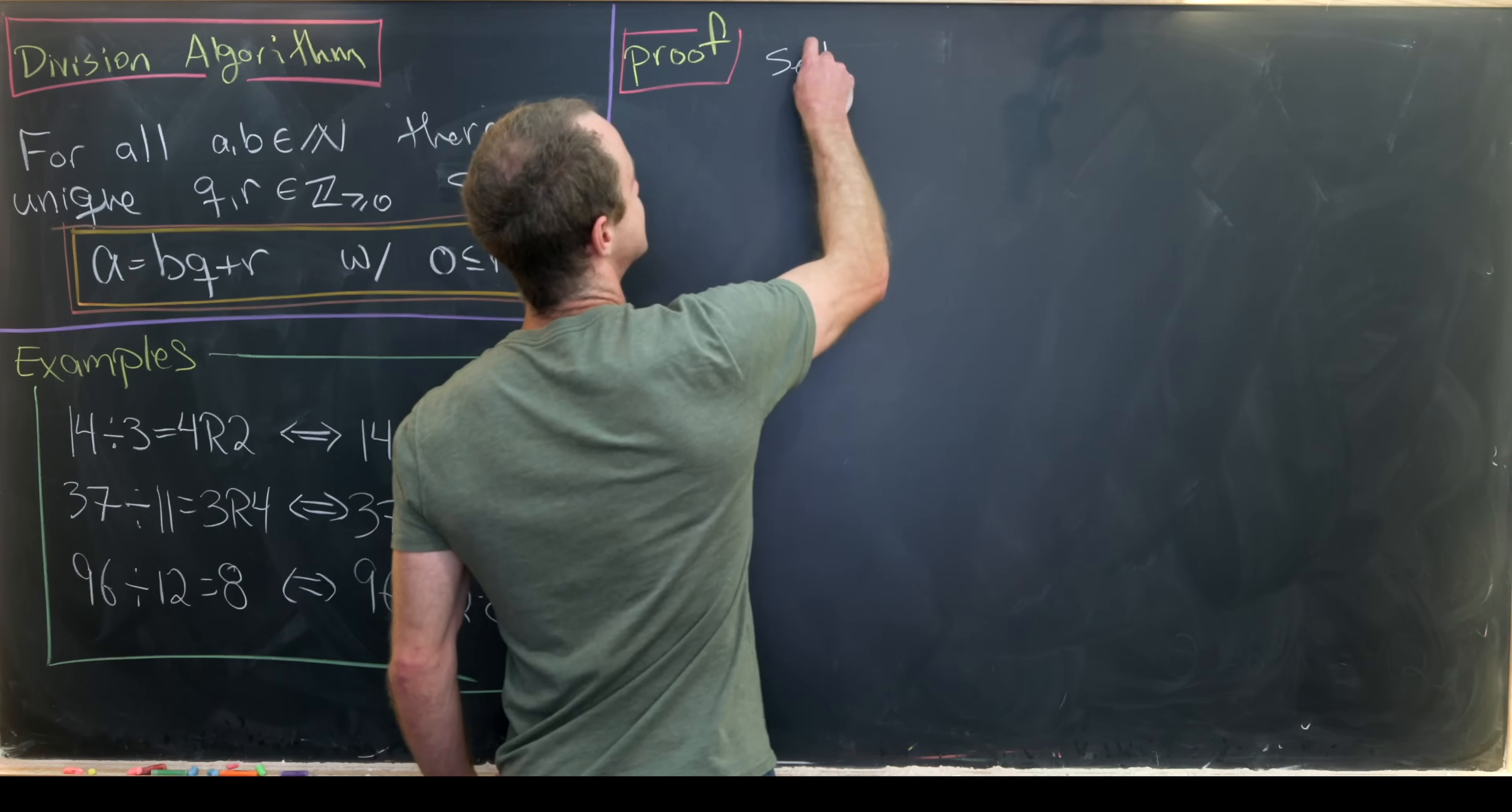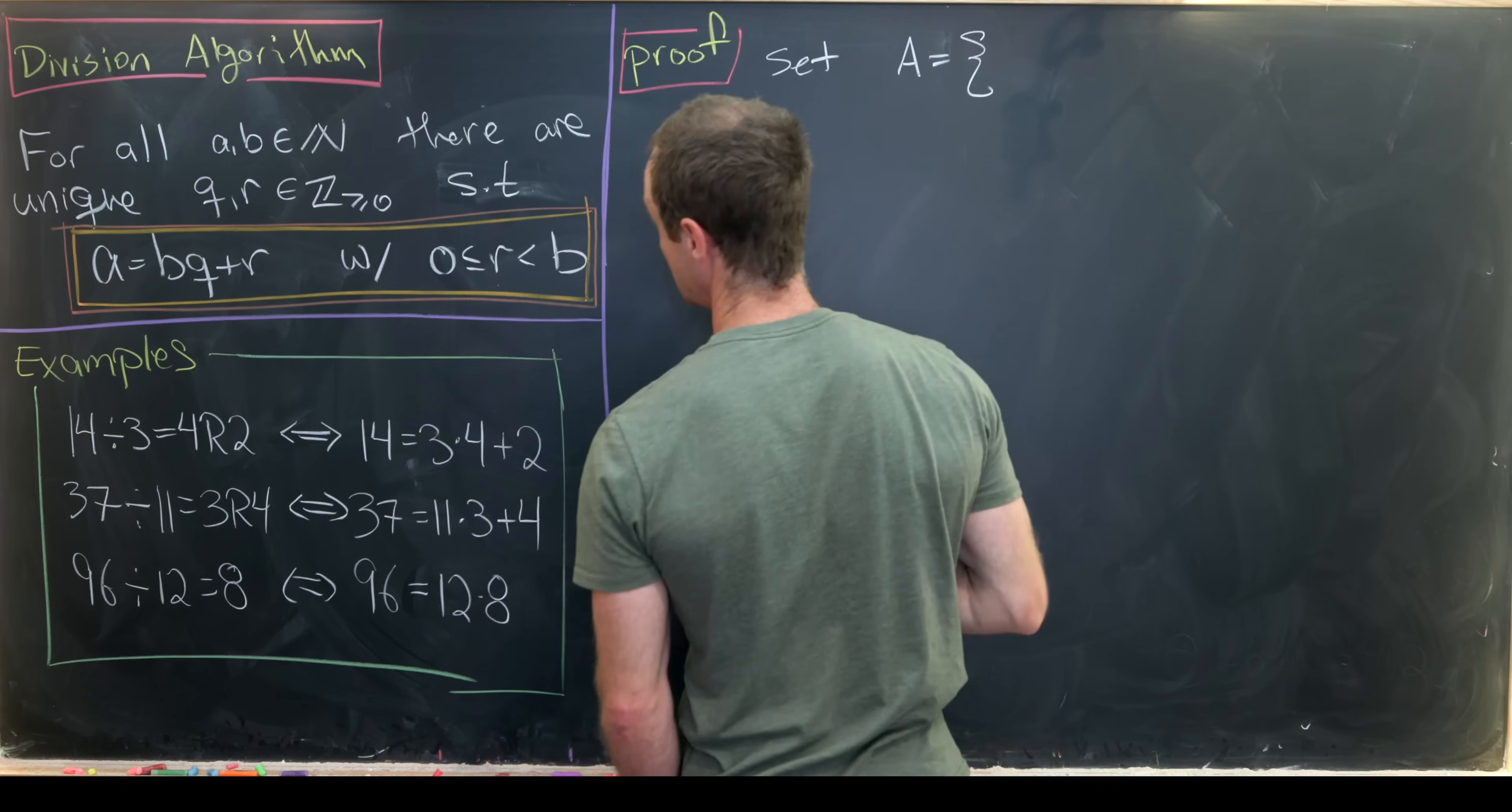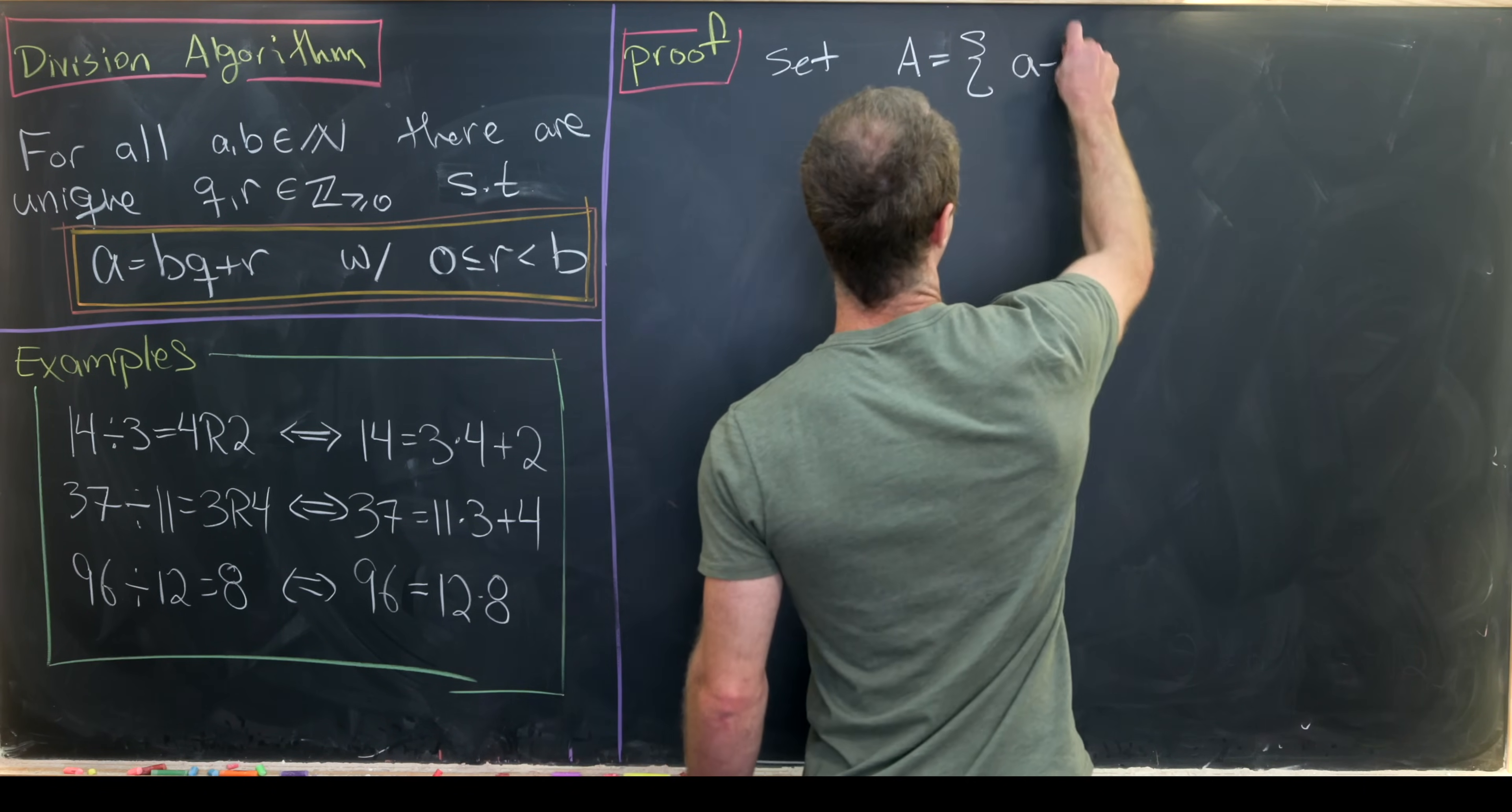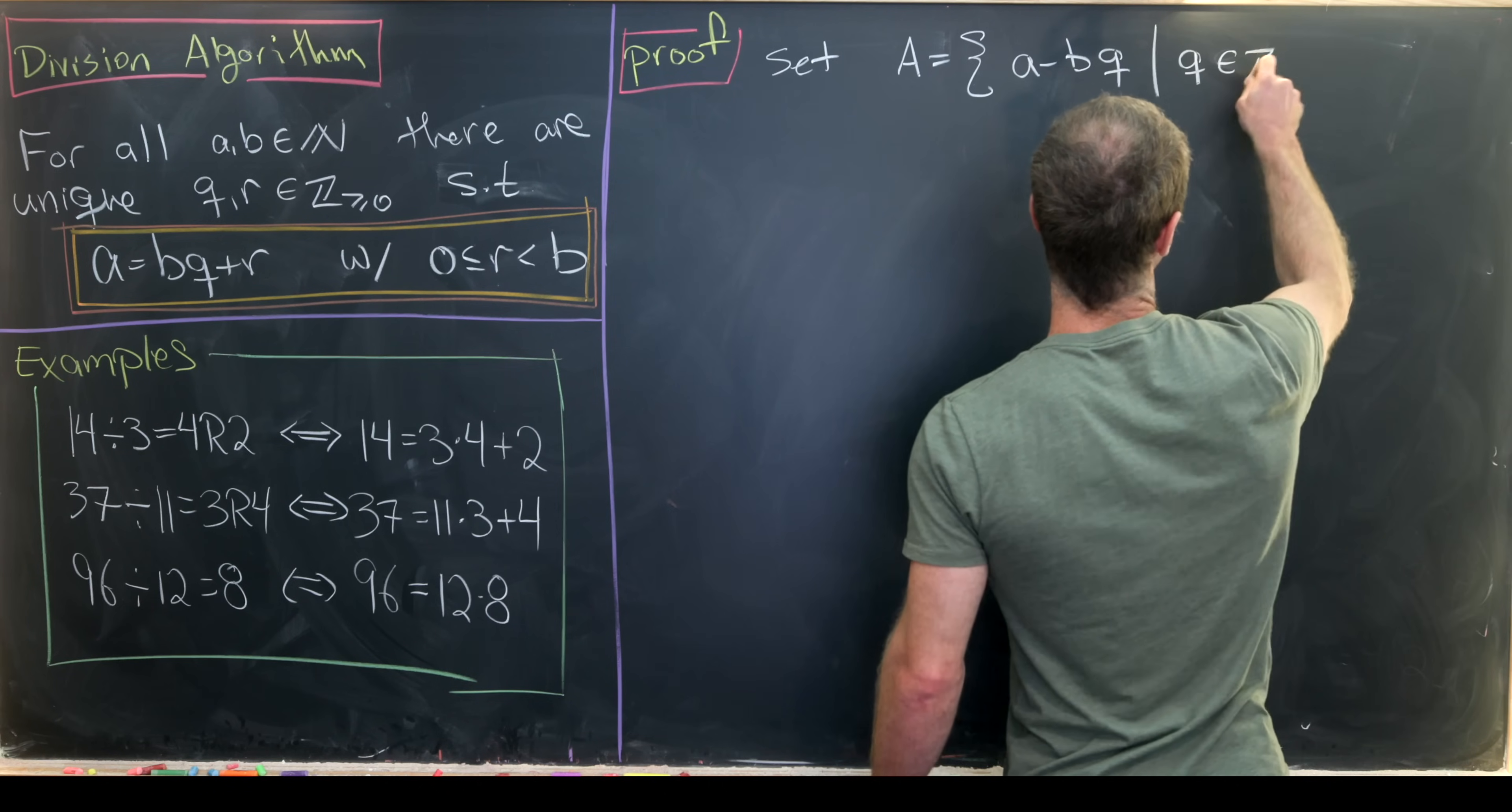So let's consider the following set. We'll set A equal to all numbers of the following form: a minus bq, such that q ranges over all non-negative integers